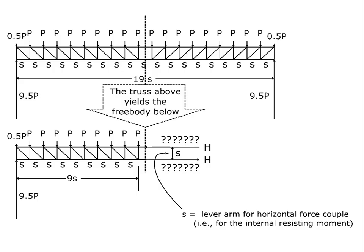Here we have a truss with a series of point forces on joints of the truss on the top. It's a square bay truss in the sense that the depth of the truss is dimension S, and each of these bays between joints is also distance S. Each of these joints can be called a joint, a vertex, or a panel point, and I will use those terms pretty much interchangeably because they're used all through the literature on this subject matter.